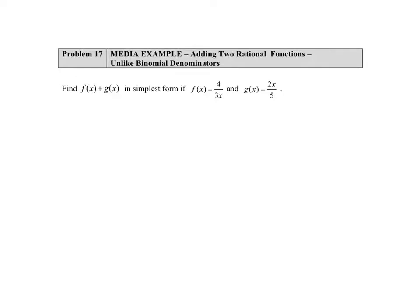In this problem we're being asked to add two rational expressions. The first rational expression is 4 divided by 3x, and that's going to be added to the second function which is 2x divided by 5.